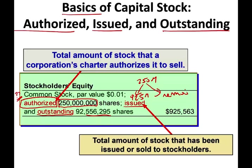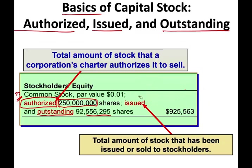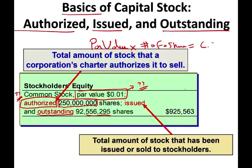The remaining shares — whatever 250 million minus 92.556 million is — simply don't exist yet. Now, when the company issues stocks they might have a par value. For example, the par value here is a penny, $0.01 per stock. If you take the par value times the number of shares, that gives you the account called common stock. For our example, 92.556 million shares times $0.01 gives us approximately $925,563.